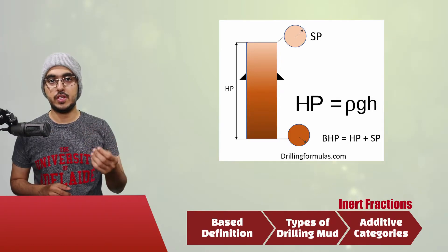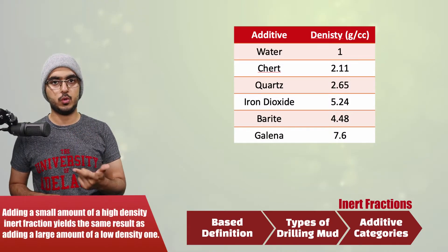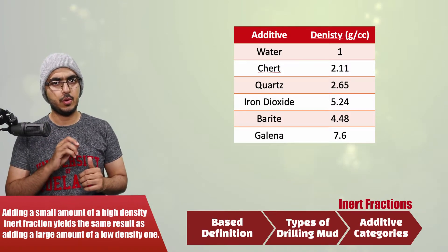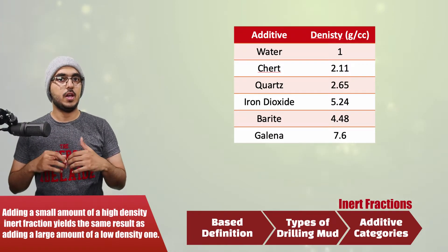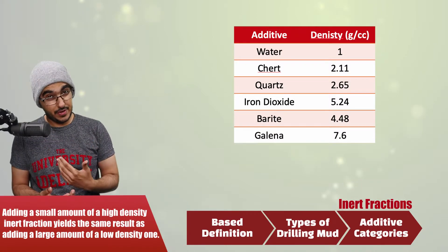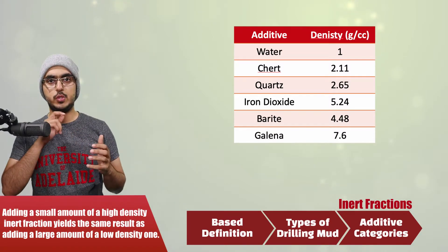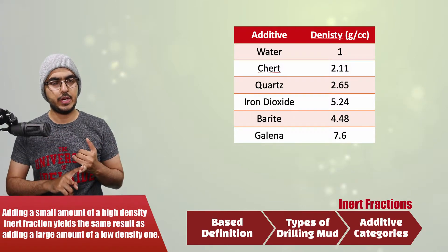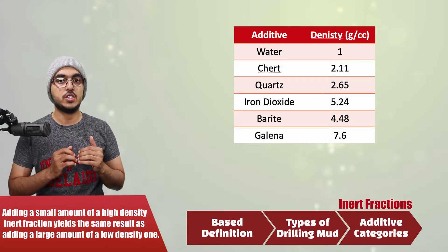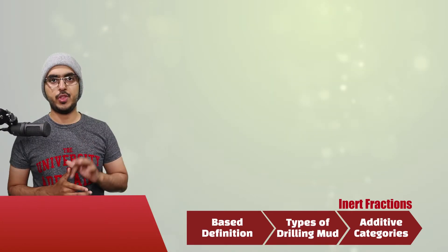To increase the density of the mud slightly, you would use cherts or quartz, which have a little bit higher density than water. To increase the mud weight significantly, you would use either iron oxide, galena, or barite, which have significantly higher density compared to water.